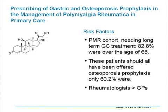The first theme deals with risk factors, starting with glucocorticoids. A presentation from the UK looked at a large cohort of patients with polymyalgia rheumatica, all needing long-term glucocorticoid treatment, over 80% aged 65 or older. According to UK guidelines, all of these patients should have been offered osteoporosis prophylaxis, but unfortunately only 60% indeed received it. Reassuringly for rheumatologists, rheumatologists were much more prudent in this regard than GPs.